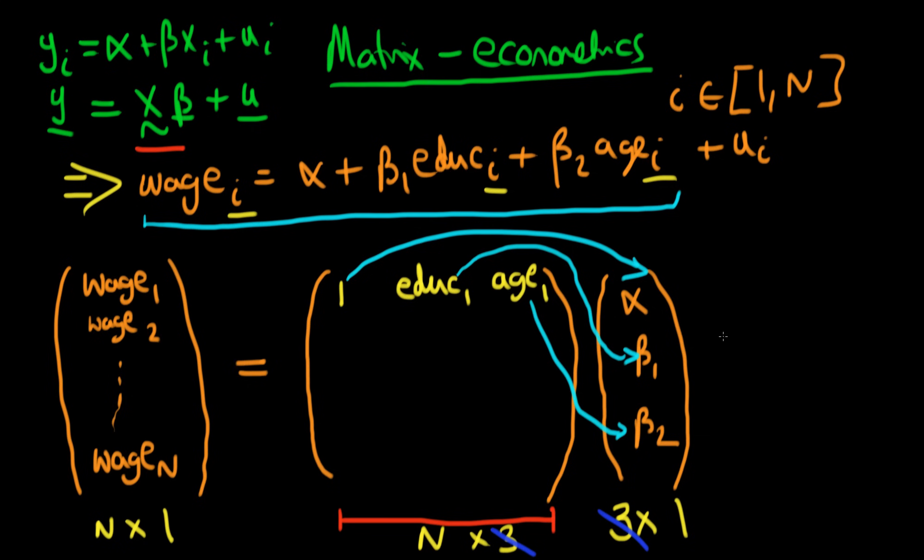But the only difference is I actually have to add on at the end a vector of our errors, because I've got an error in this above relationship. What size does this vector of errors have to be? Well, because I'm adding it, it must actually have to have the same size as our dependent variable vector. So it's just an n×1 vector of my disturbance terms u1 through un, where u1 is the error for individual 1 and un is the error for individual n.